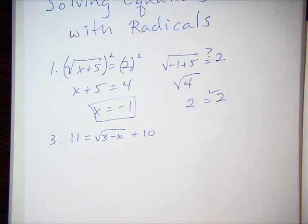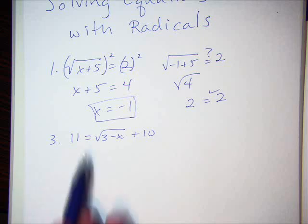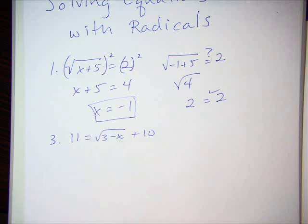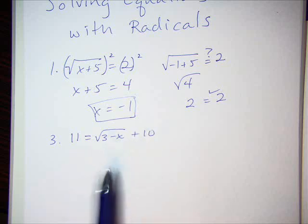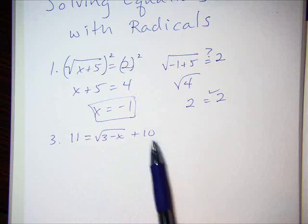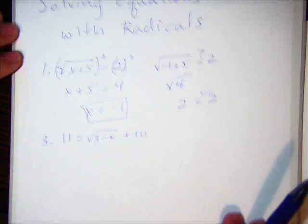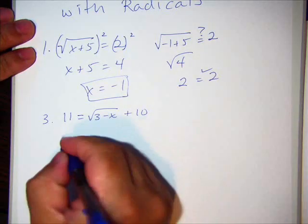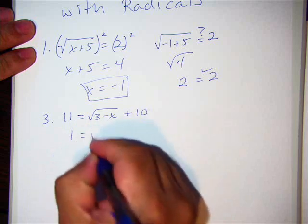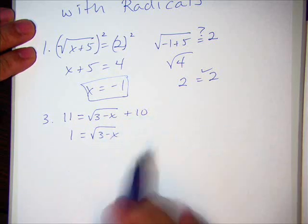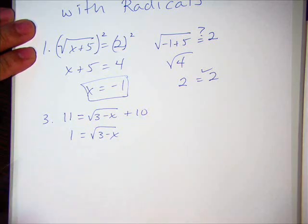Okay. One of the things you want to do when you solve these or right before you square them, you want to isolate the radical as much as you can. This plus 10, if I were to square it now, it's going to prove to be a royal pain. So what we're going to do is move it over to the left. So I'm going to subtract 10 from both sides. When I subtract 10 from both sides, I get 1 = √(3-x). So I've moved the 10 to the left by subtracting it.